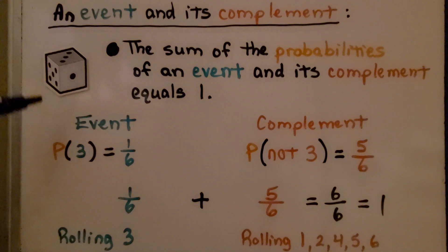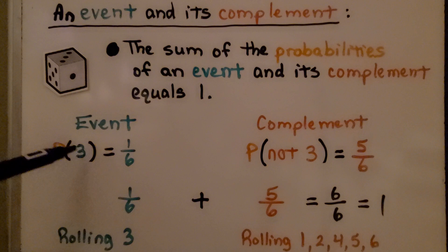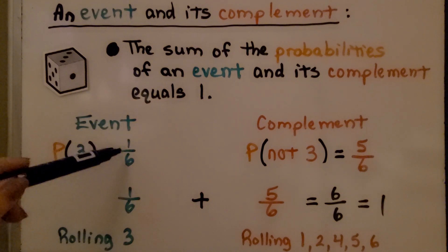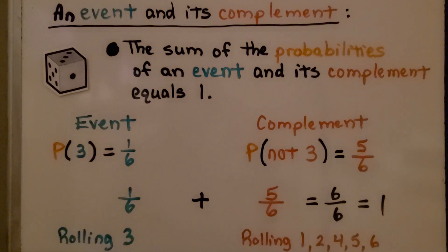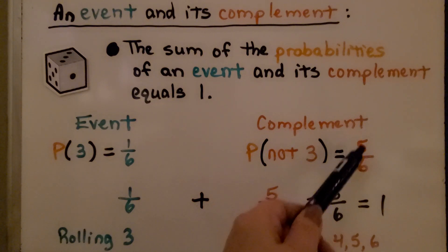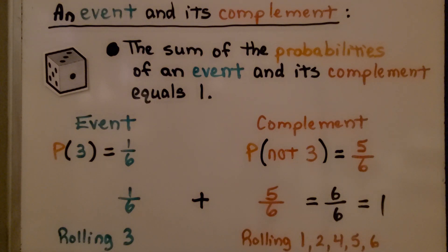If we have a number cube, and our event is to roll a three, there's six sides to the number cube, and there's only one three, so we'd have a one-sixth probability of that event happening. The complement for it not to be three would be five sides out of the six sides. It would be five-sixths. And if we add the event, one-sixth, plus the complement, the five-sixths, it's going to equal six-sixths, which equals one. We have rolling a three for our event, and not three would be rolling anything but three, a one, two, four, five, or six.